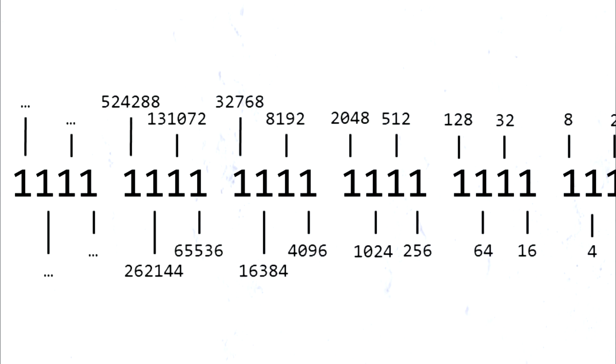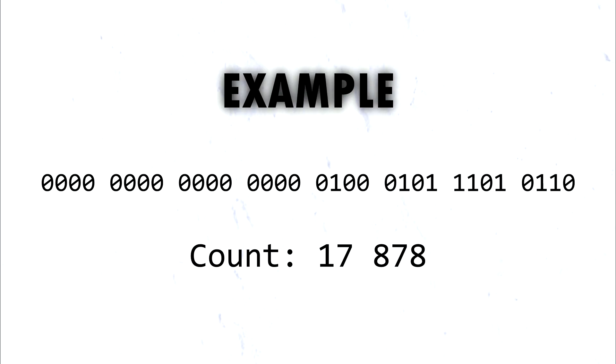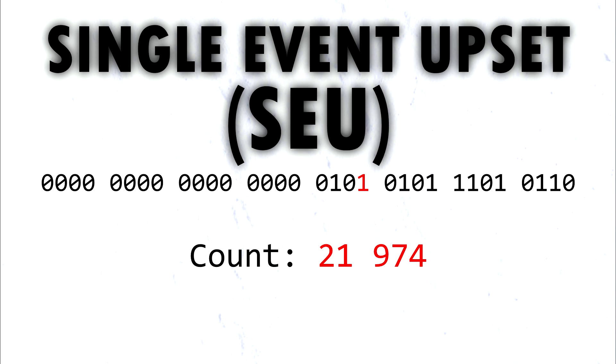This is how many votes were wrongfully added in the 2003 election. As this count was being made in the computer, a charged particle from outer space changed this bit from a 0 to a 1. This bit flip is sometimes known as a Single Event Upset, or SEU for short.